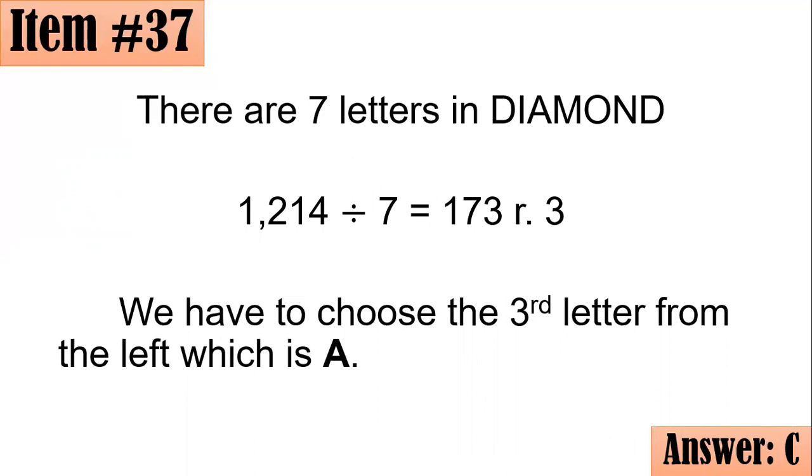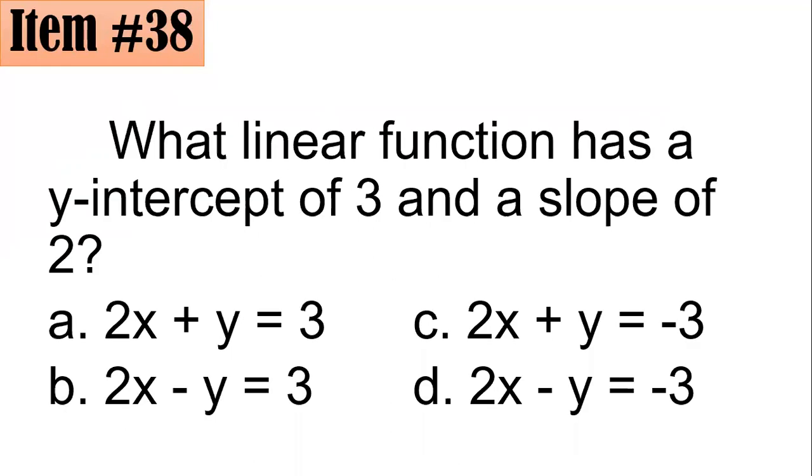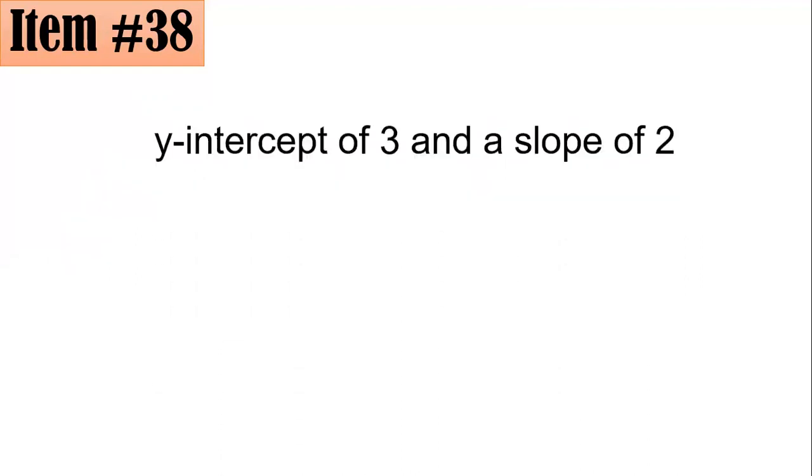Item 38. What linear function has a y-intercept of 3 and the slope of 2? Which of these choices do you think is correct? We have to remember that we have the form y equals mx plus b. This is what you call the slope-intercept form. M here represents the slope and b represents the y-intercept.